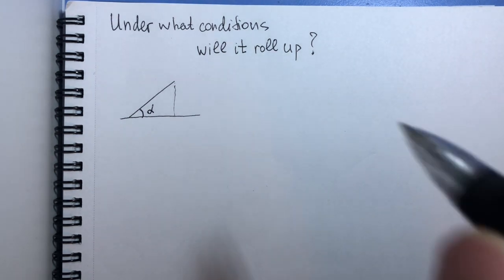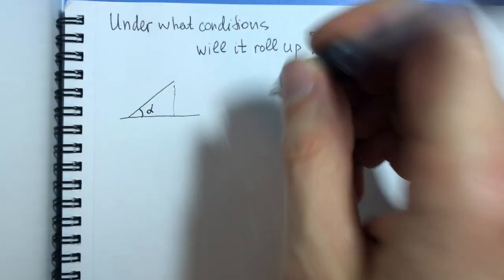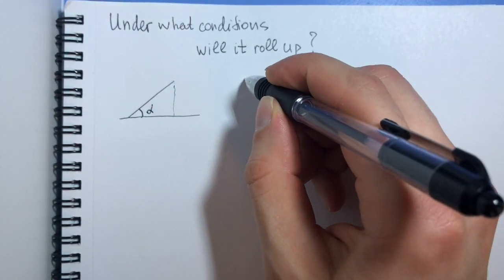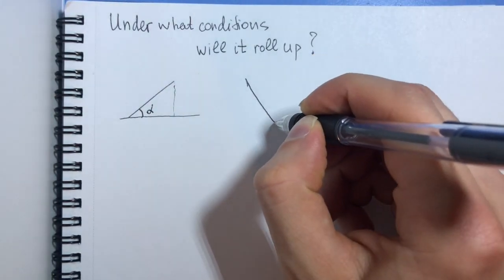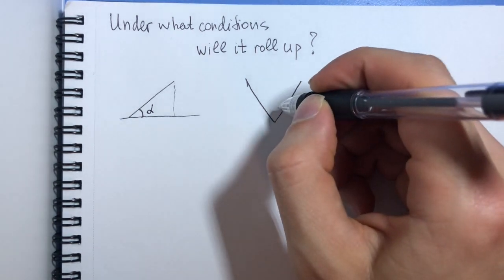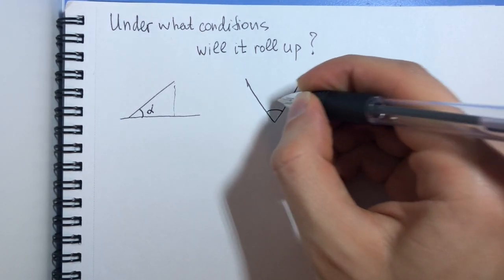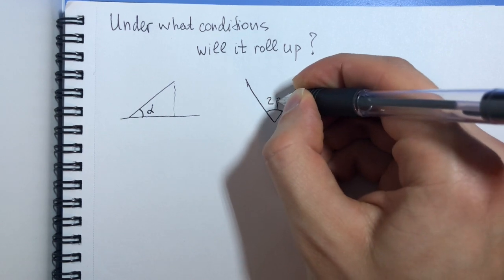Now if we see our chopsticks from above, there will be an angle, right? And for convenience, let us denote this angle 2 beta.